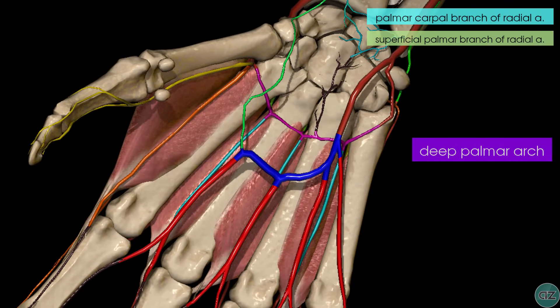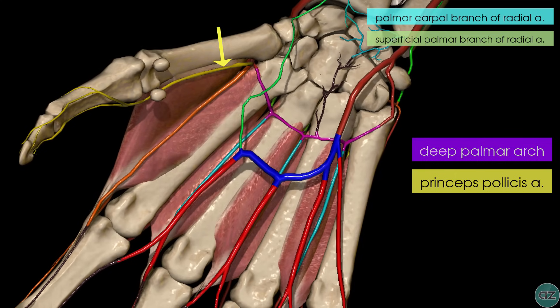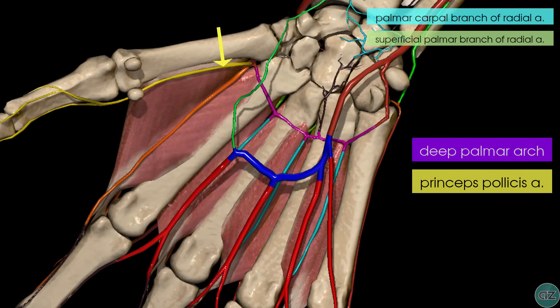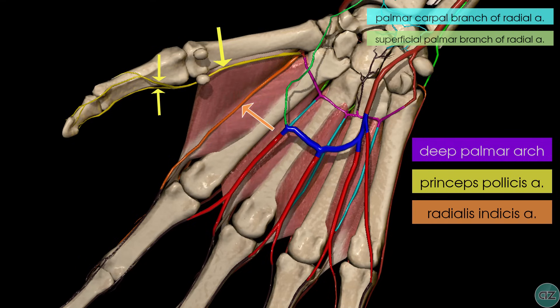In addition, there are two other arteries given off just as the radial artery turns onto the palmar aspect of the hand. In yellow, we have the princeps pollicis artery, given off as the radial artery turns in to form the deep palmar arch; this artery runs along the palmar aspect of the first metacarpal and divides into two branches distally. The other branch is the radialis indicus artery, which supplies the index finger, seen in orange running along the first dorsal interosseous muscle.